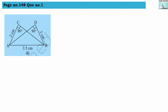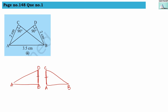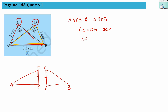For the second numerical, we have two triangles: triangle ADB and triangle ACB. Here AC is 2 centimeters and DB is 2 centimeters, so AC equals DB equals 2 centimeters. Angle C and angle D are both equal to 90 degrees. AB is common in both triangles, so AB equals AB, which is 3.5 centimeters — a common side in both triangles.